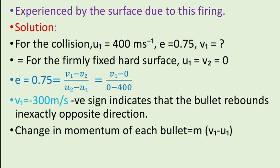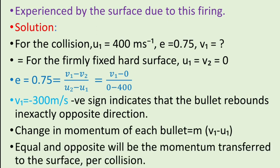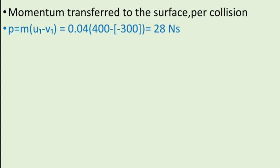Now change in momentum of each bullet is given by M in bracket V1 minus U1. Equal and opposite will be the momentum transferred to the surface per collision. Momentum transferred to the surface per collision is given by p is equal to M in bracket U1 minus V1. After substituting and simplification we get p is equal to 28 newton second.